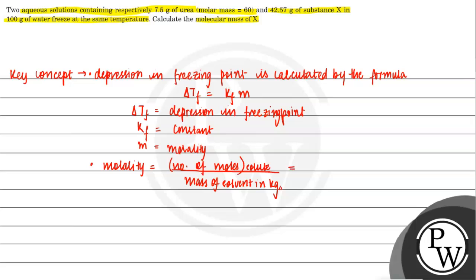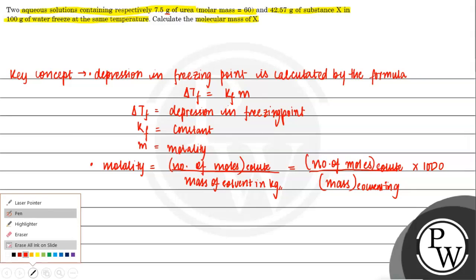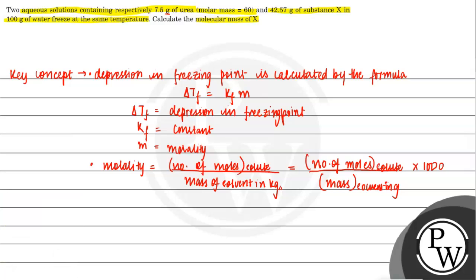If the mass of solvent is given in grams, then we adjust the formula: molality equals number of moles of solute into 1000, divided by mass of solvent in grams.